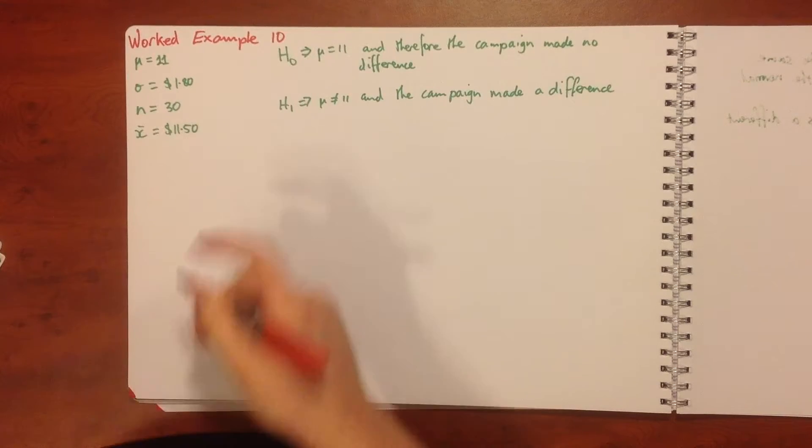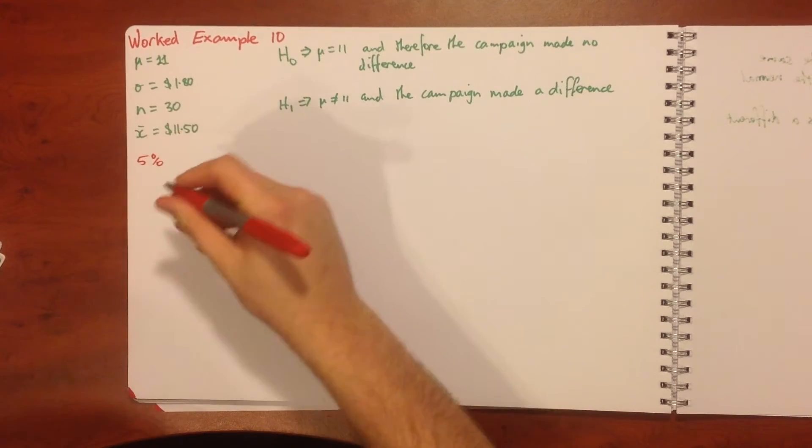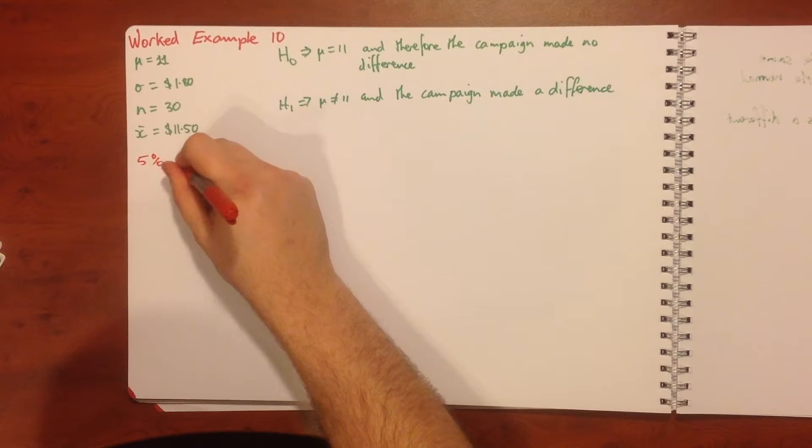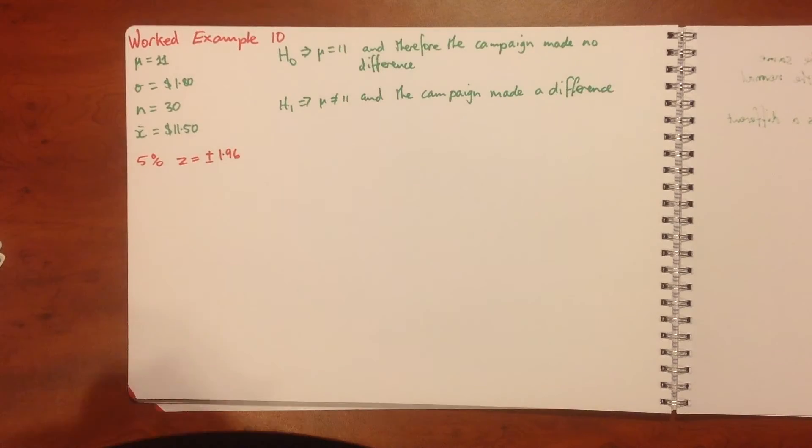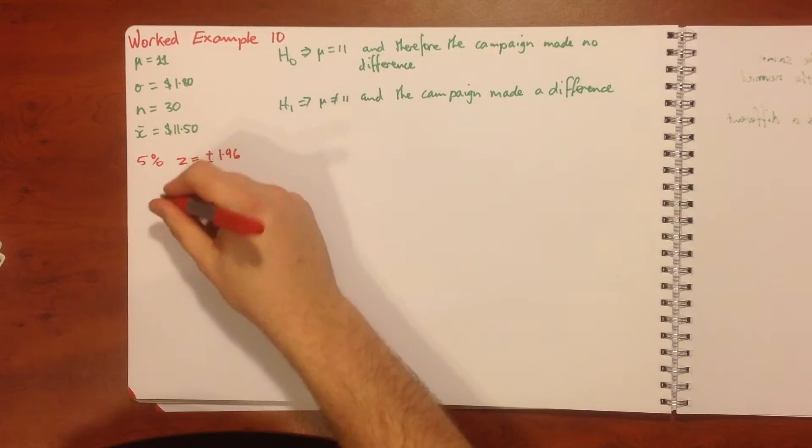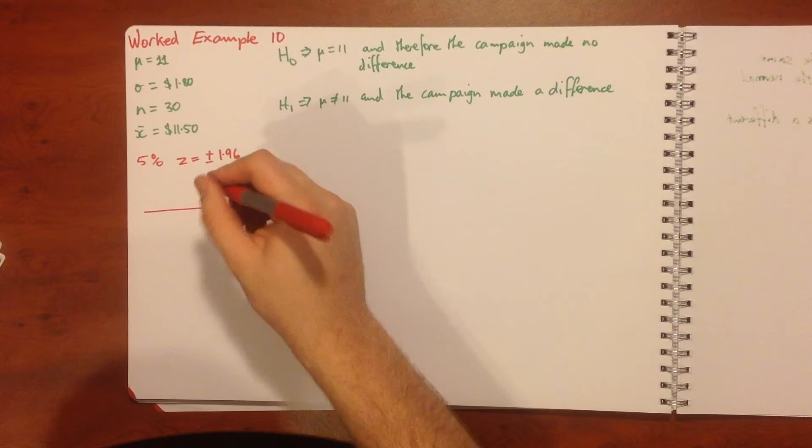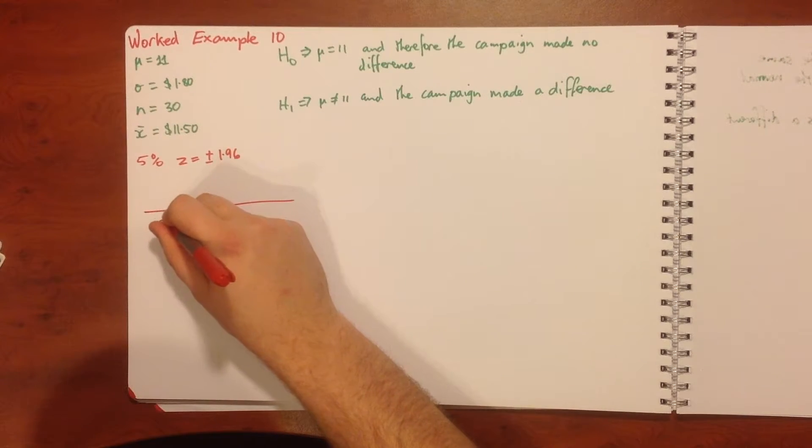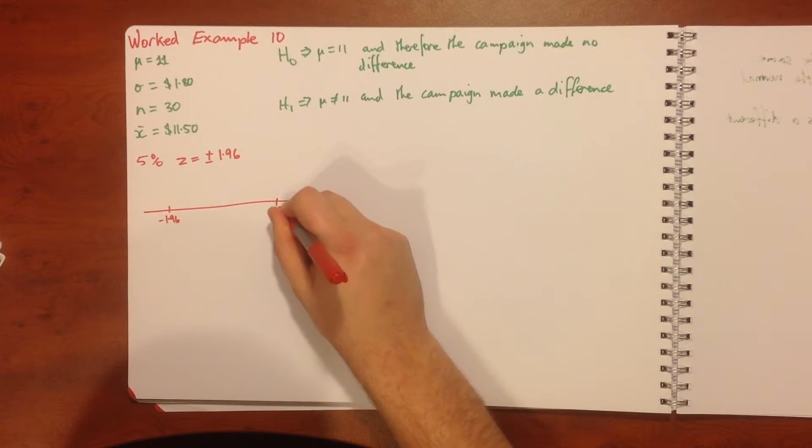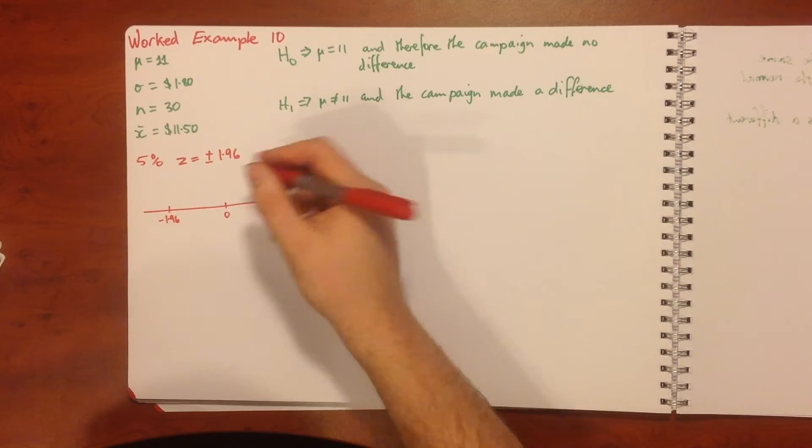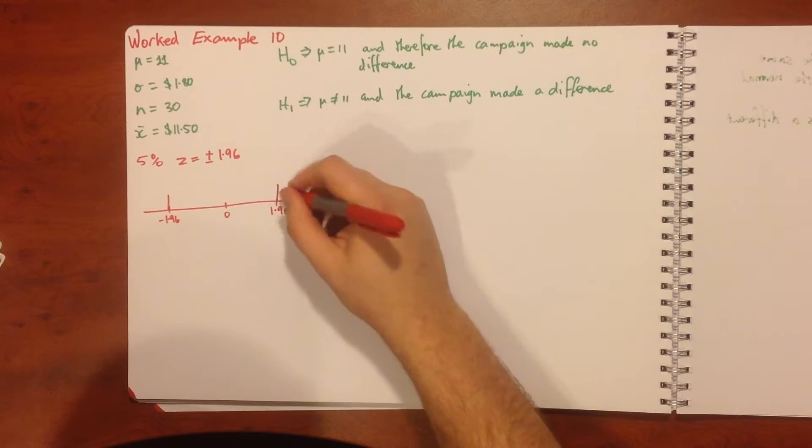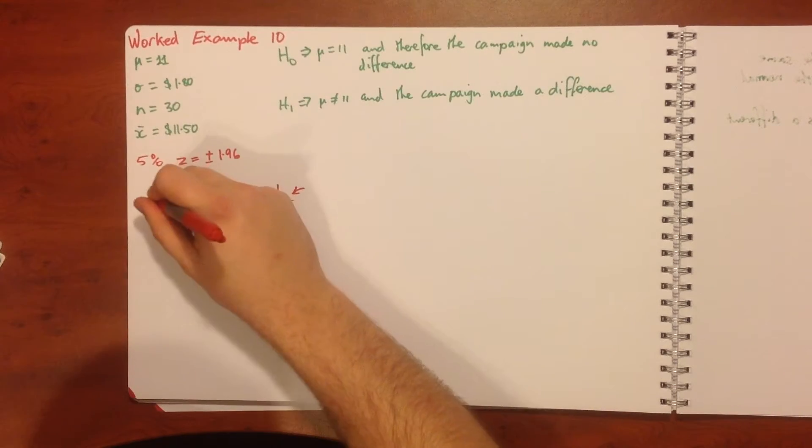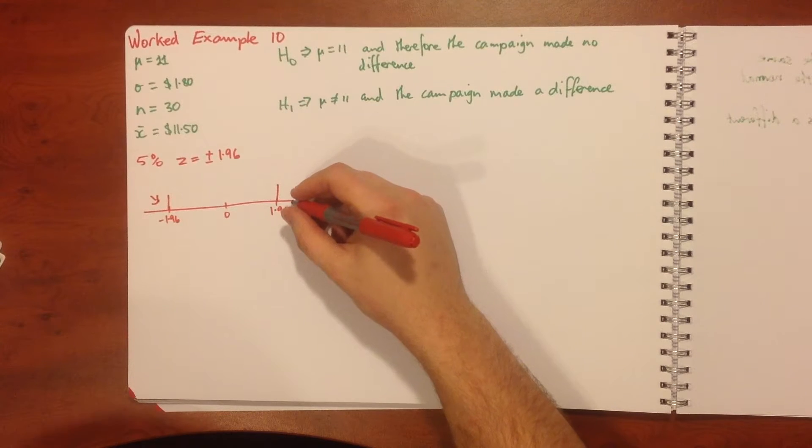Now at the five percent significance level then we get a z value of plus or minus 1.96. So what we're saying is we've got our number line here, we've got negative 1.96 and positive 1.96, zero in the middle. Then we're going to, if our value falls in here or in here, we are going to reject our null hypothesis.